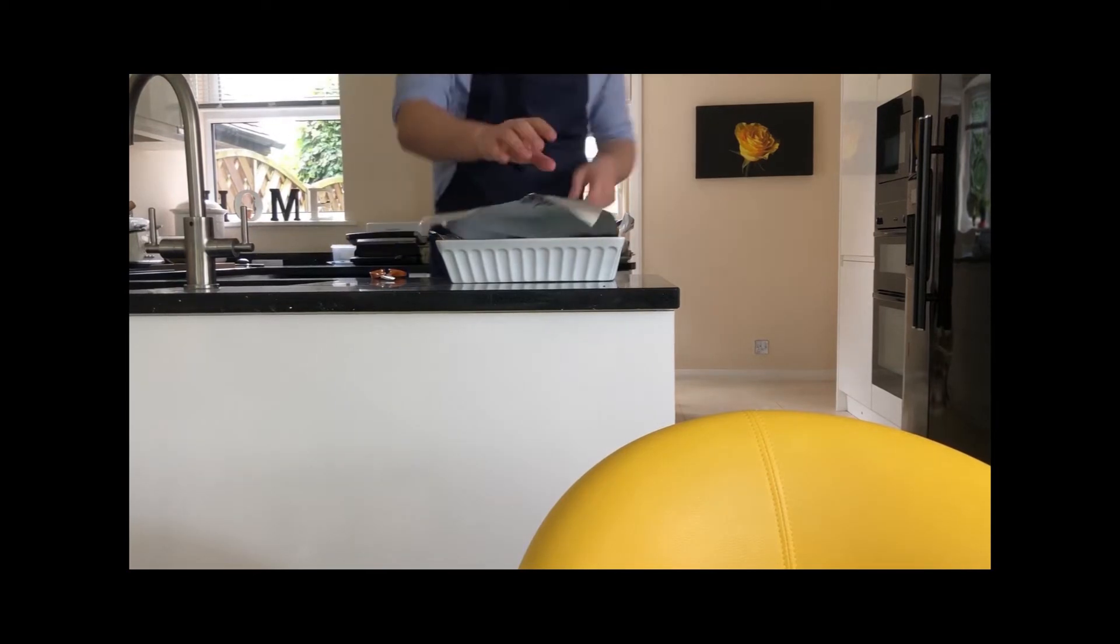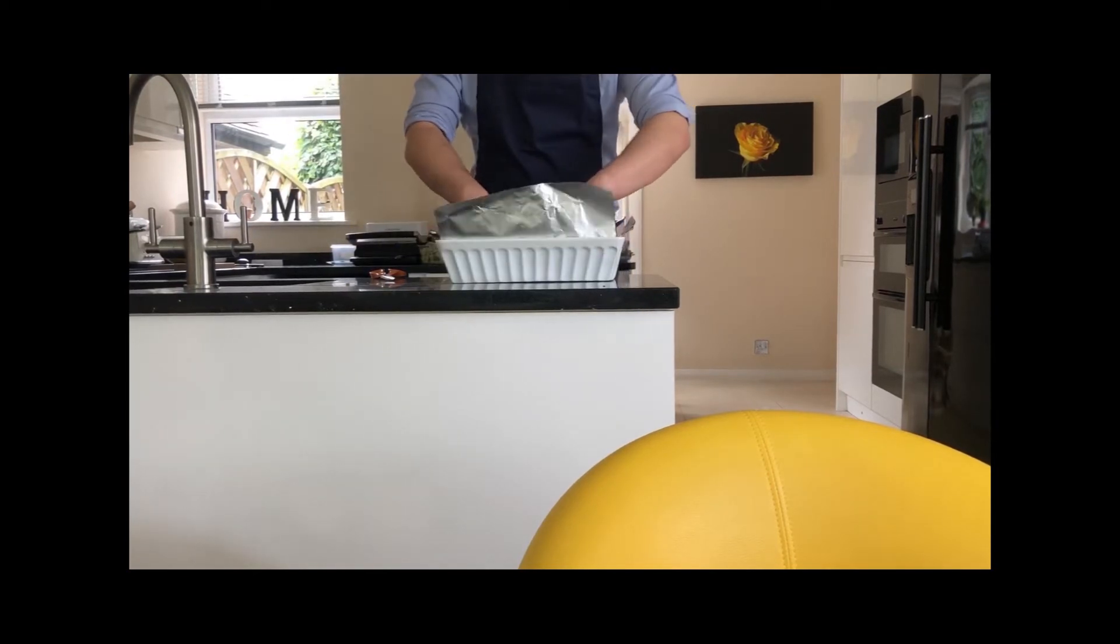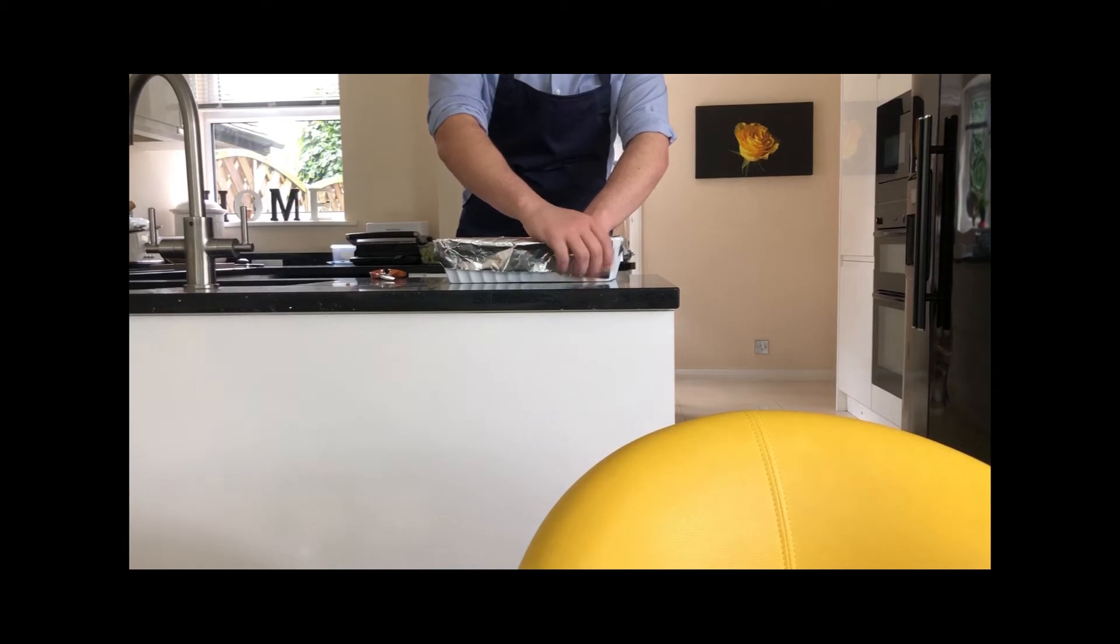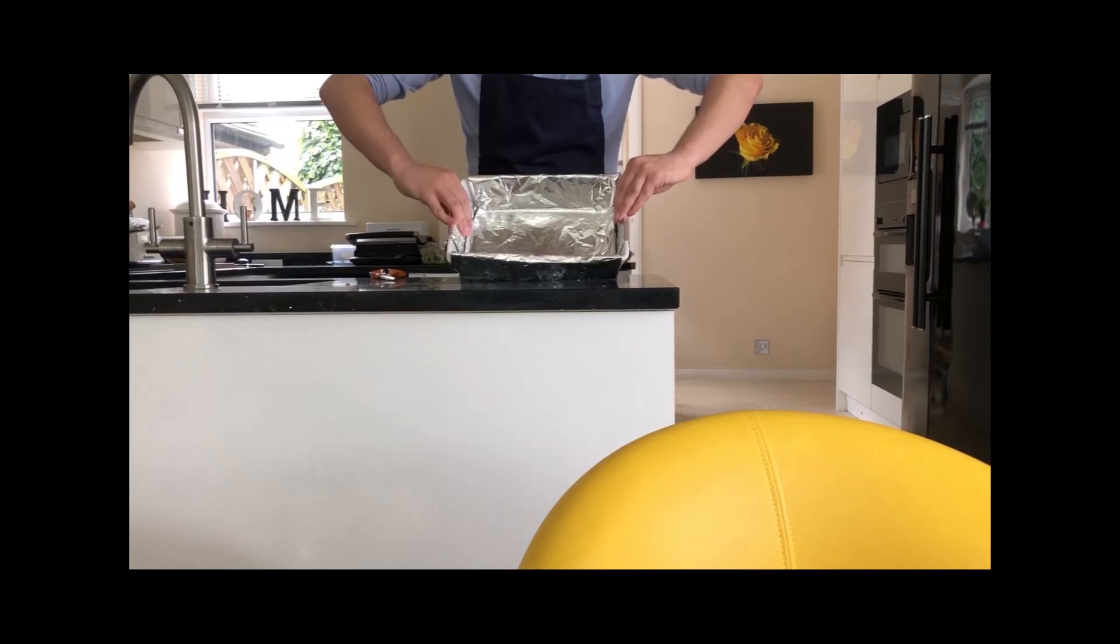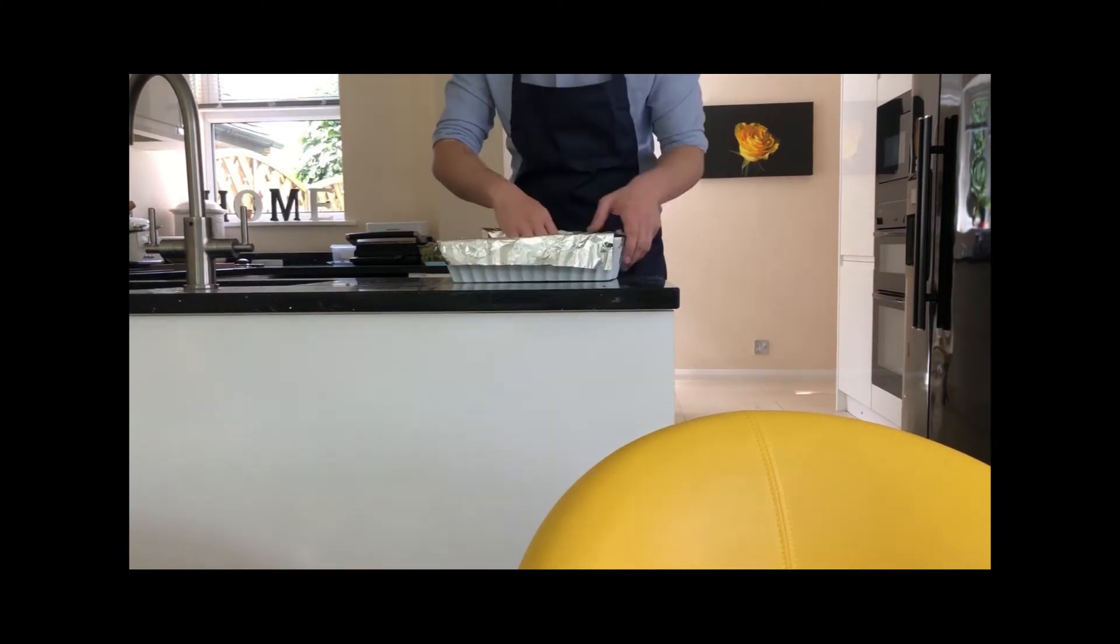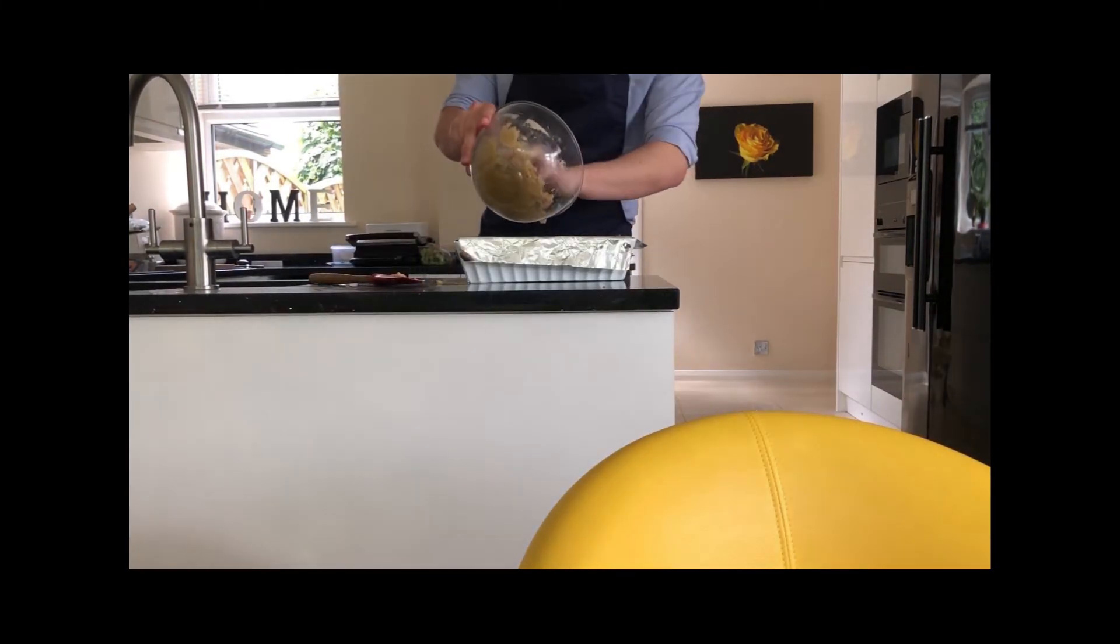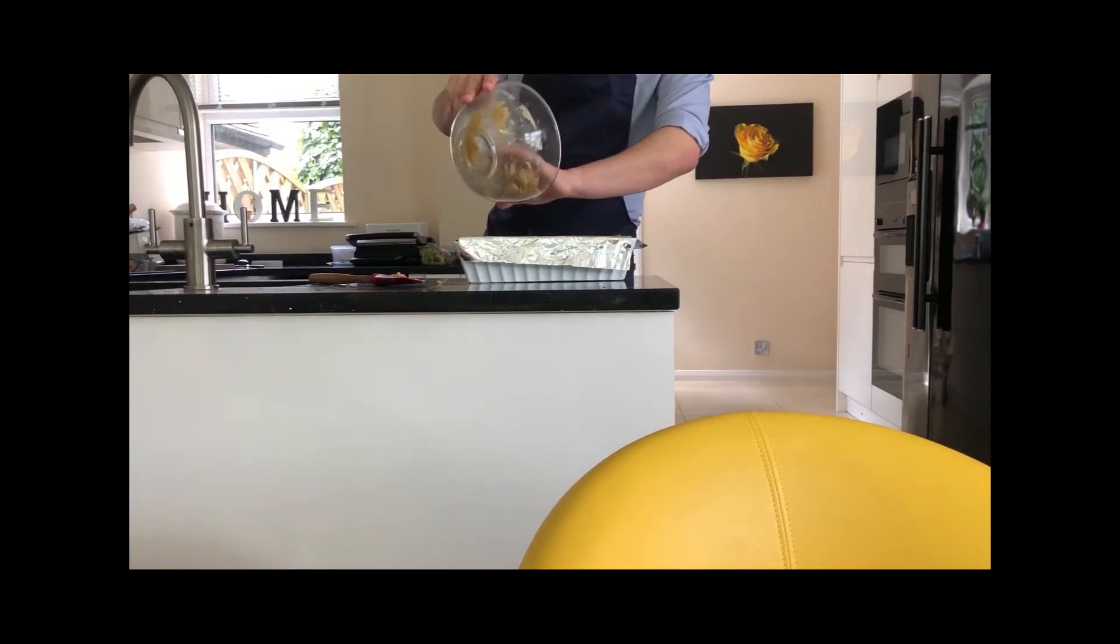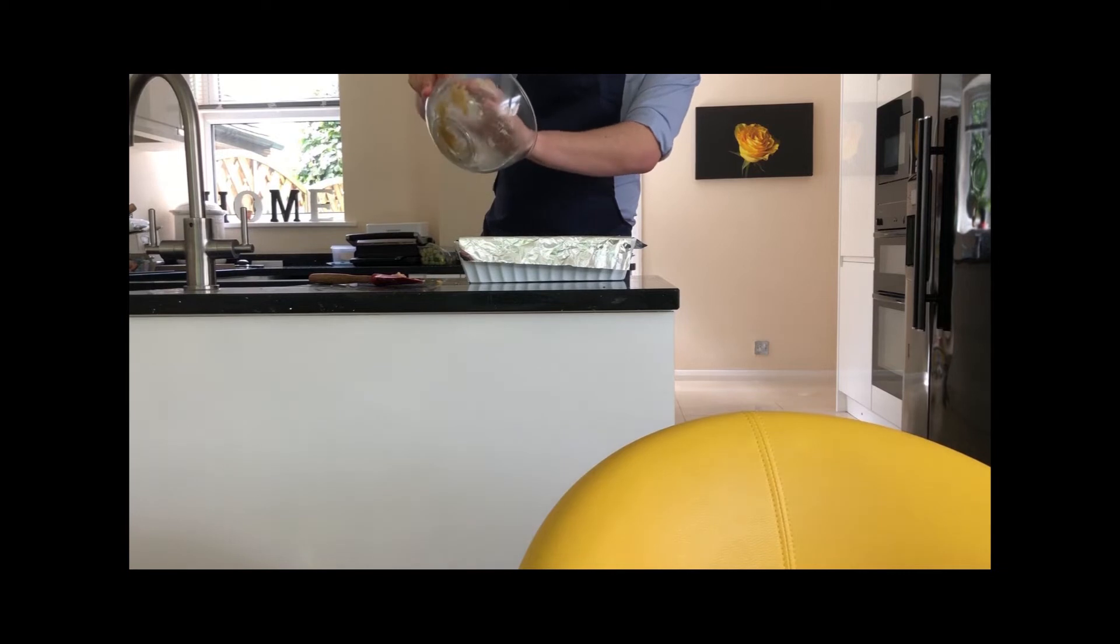Line a lasagna dish with tin foil both vertically and horizontally and then line with butter. Now place the shortbread mix into the lasagna dish using wet fingers.